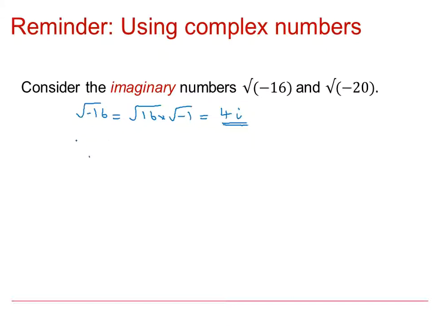If we look at the square root of minus 20, again we can use our laws of surds to write it as root 20 times root minus 1. Root 20 you can write as 2 root 5 and the standard way now of writing the square root of minus 1 is i.